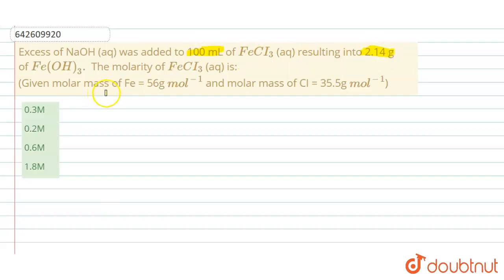So we have initially FeCl₃ (aq) solution whose volume is 100 mL. We are adding NaOH which is present in excess, which results in the formation of Fe(OH)₃ whose mass is given as 2.14 grams.